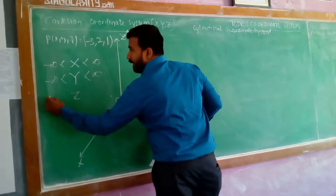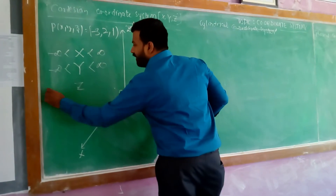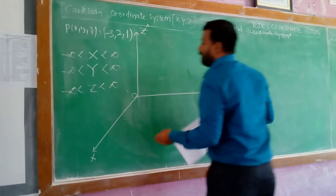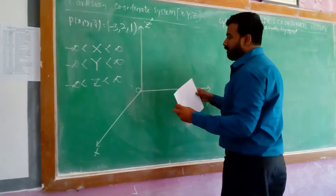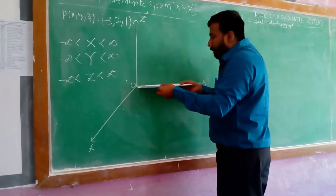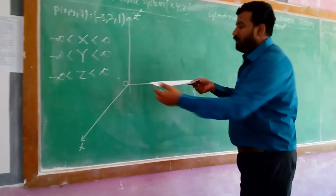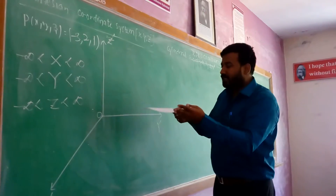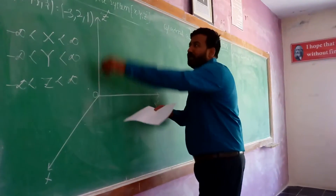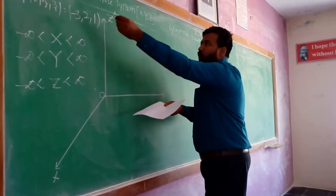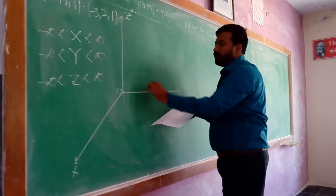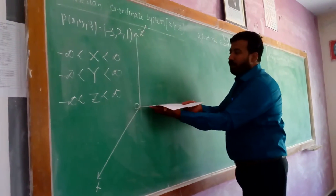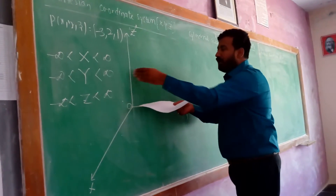Coming to z: z ranges from minus infinity to plus infinity, which is the perpendicular distance from the x-y plane. So z is nothing but this distance. If you plot (−3, 2, 1), the value 1 will fall here — the perpendicular distance from the x-y plane, on the z axis or parallel to the z axis.